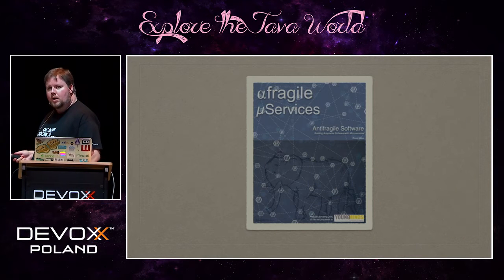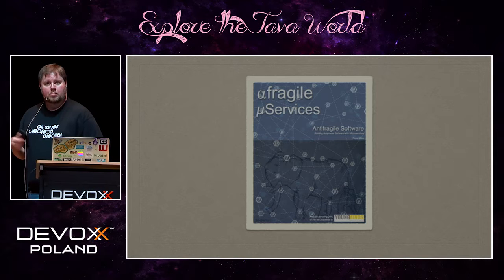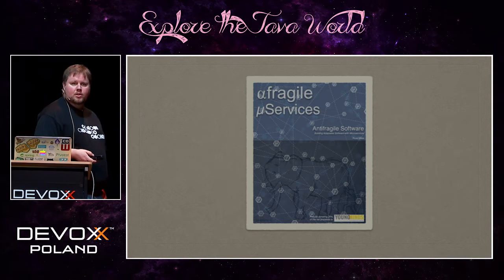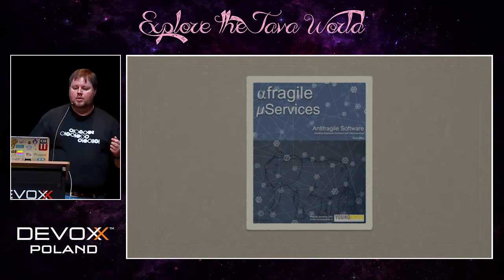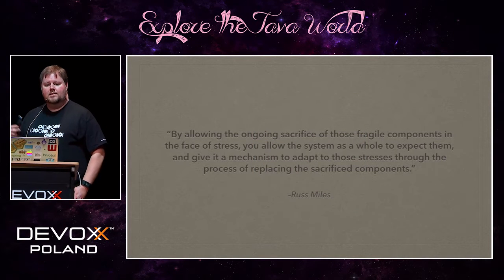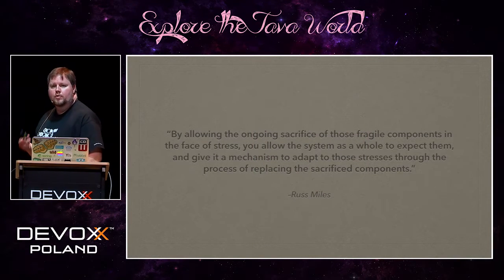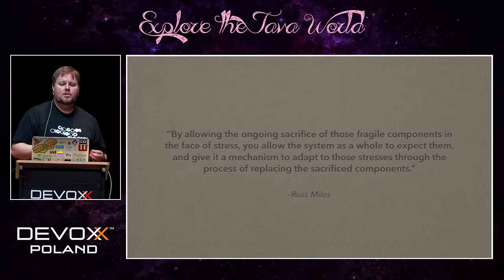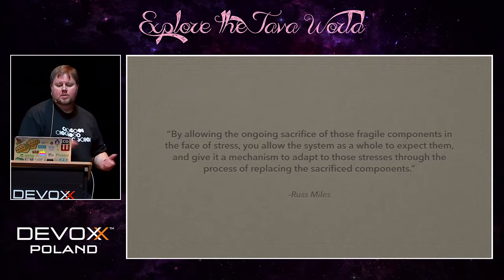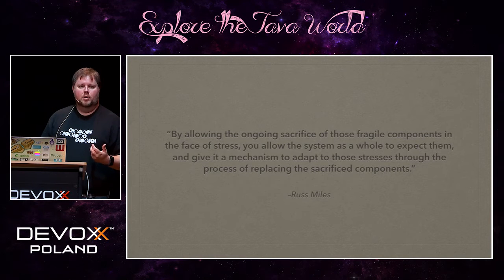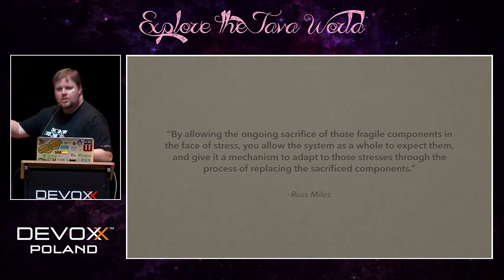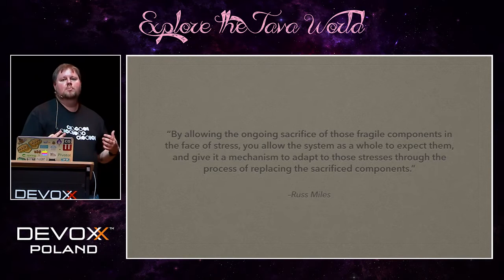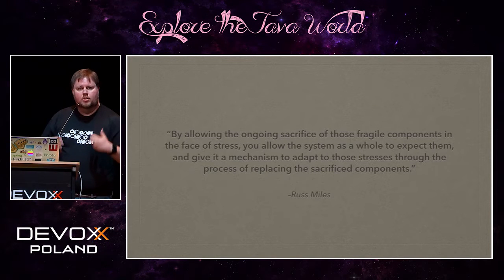Being the two microservices speakers, we decided to compare notes. That was when I first encountered this philosophy that microservices actually have very little to do with modularity, and everything to do with the notion of anti-fragility. Russ believed in this philosophy so much that he decided he was going to write a book entitled Antifragile Software. He said antifragile software is constructed from otherwise fragile components, but by allowing the ongoing sacrifice of those fragile components in the face of stress, you allow the system as a whole to start to adapt.